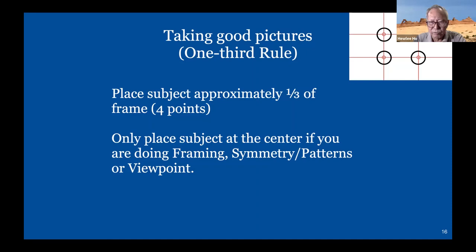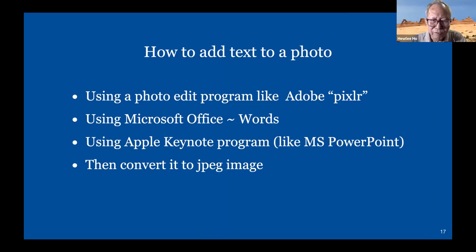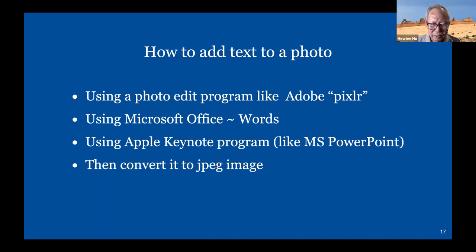To add text to a photo there are three ways to do it. One is to download the app called Pixlr. The other is to use Microsoft Office Word program, then convert to an image. Or use Apple Keynote, similar to Microsoft PowerPoint — put the picture and insert your text into the slide and convert it to an image.